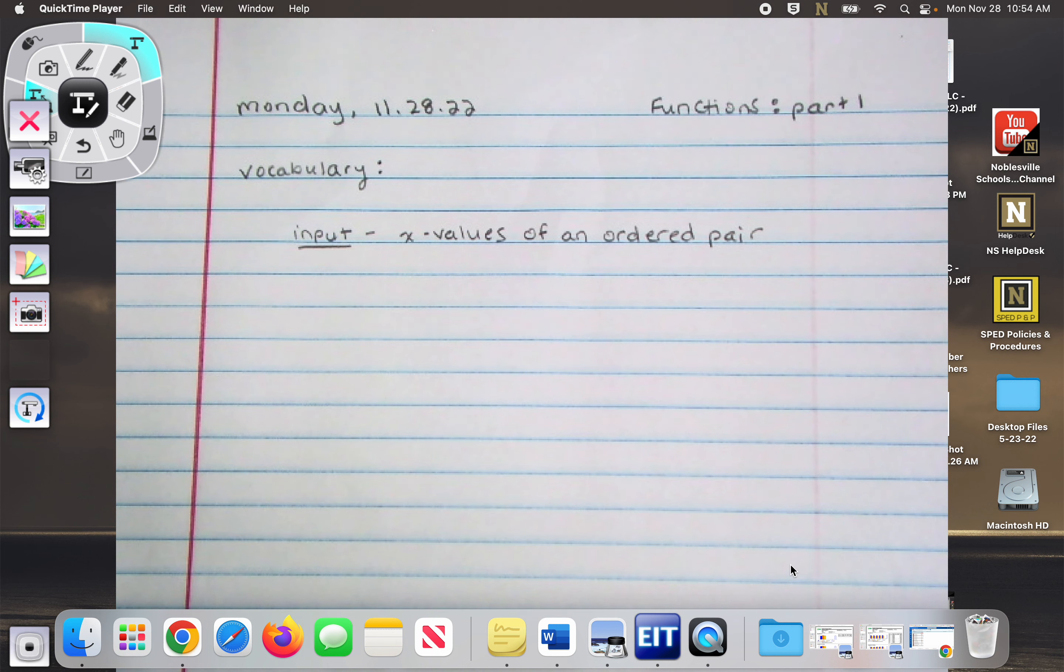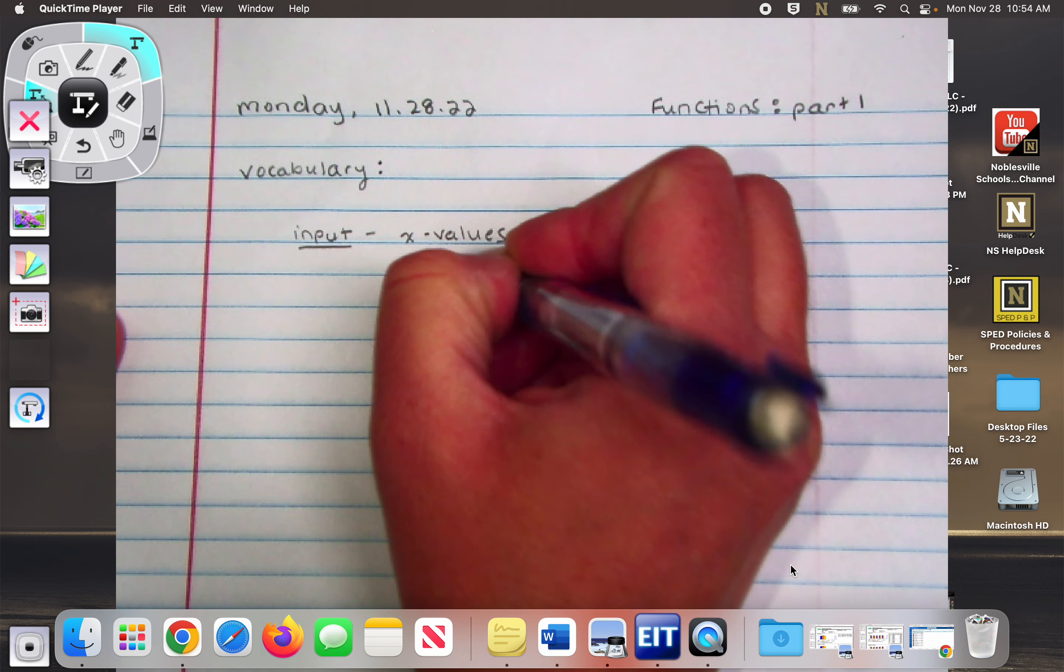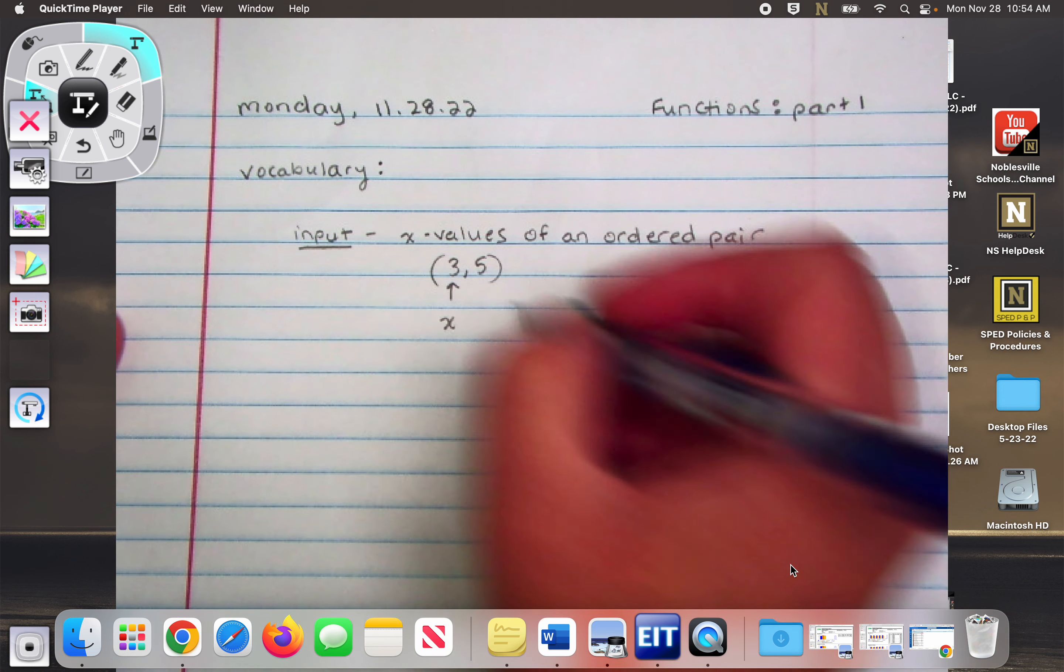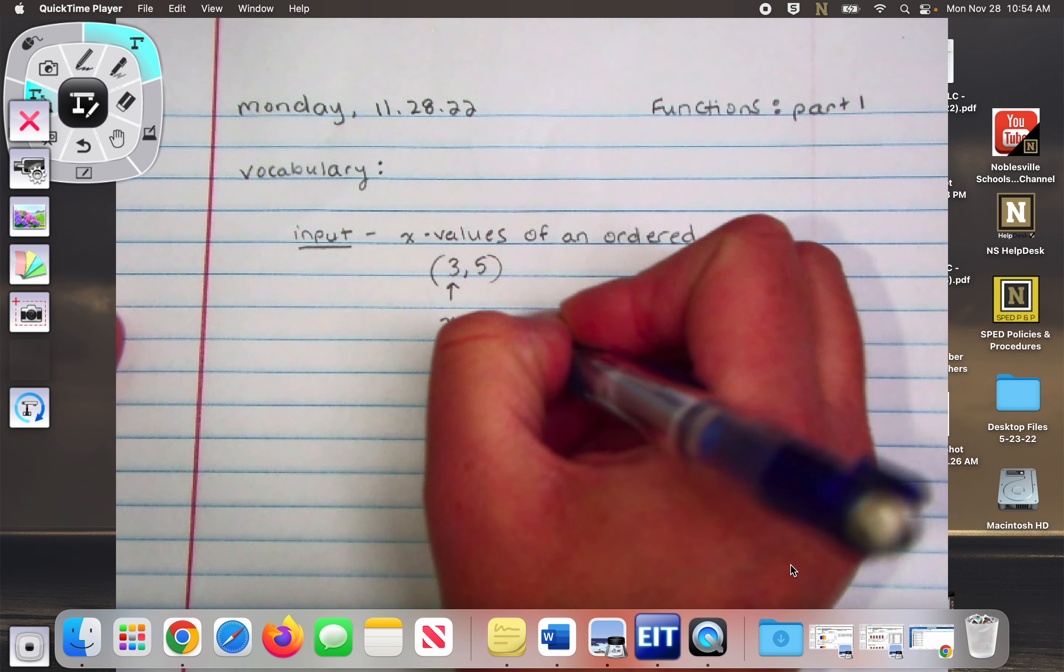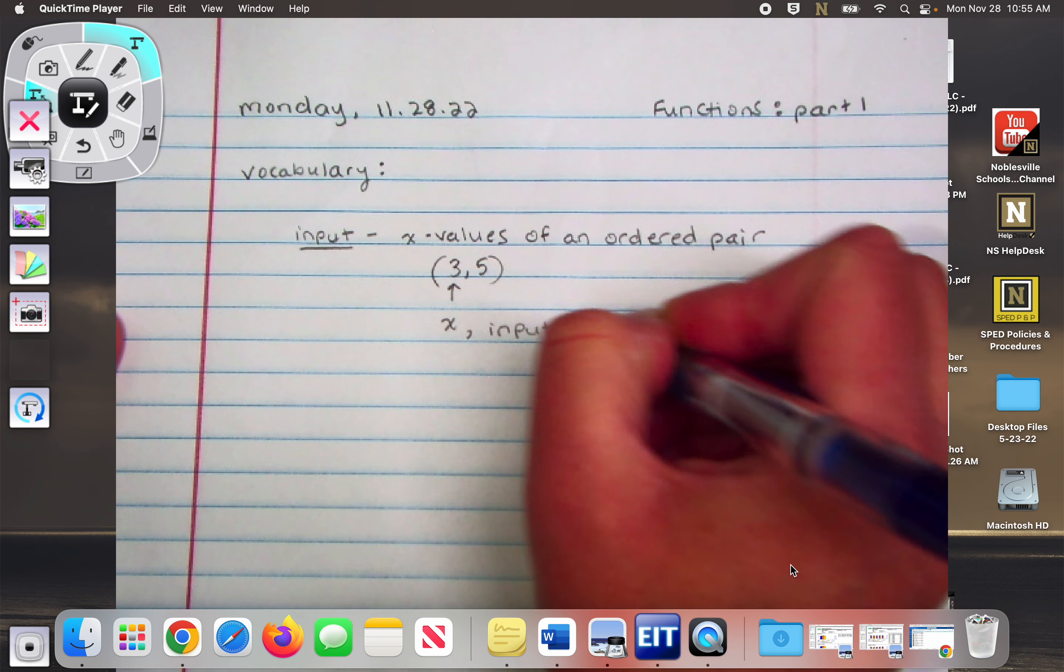So an input is the x value of an ordered pair. So if I have the ordered pair (3, 5), this is my x value. It's also the input.